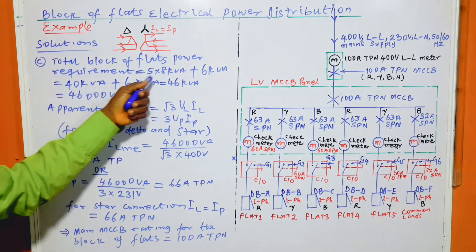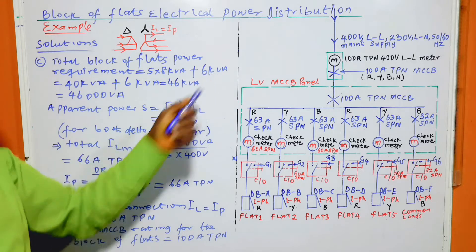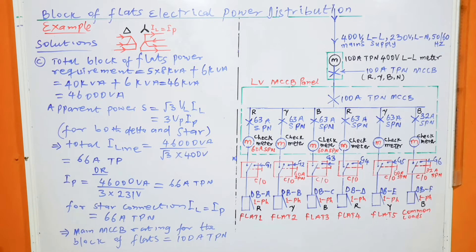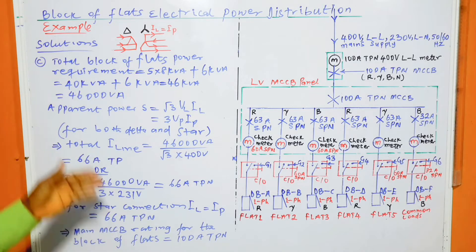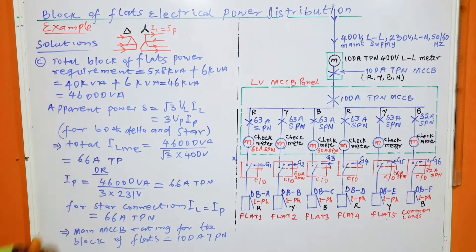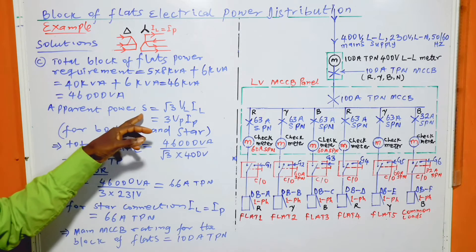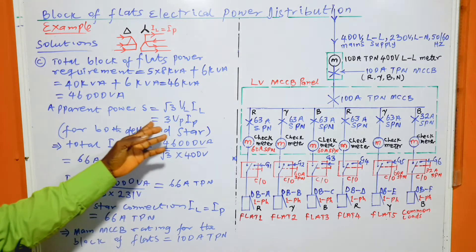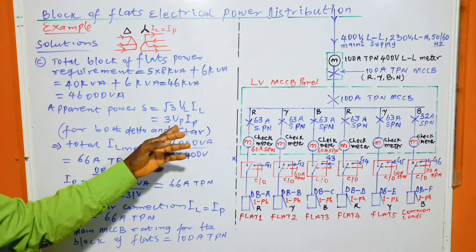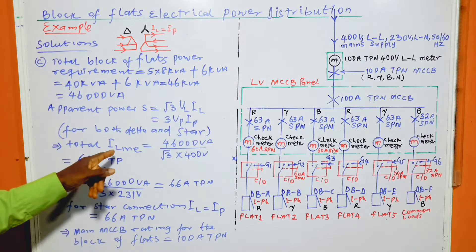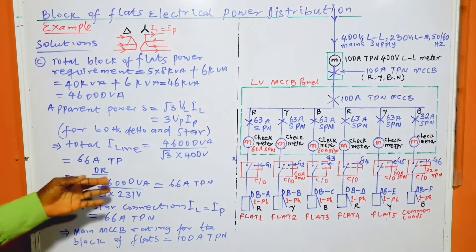Part C: total block of flats power requirement equals 5 times 8 kVA plus 6 kVA — five identical flats each requiring 8 kVA plus the 6 kVA common load — giving 46 kVA, which equals 46,000 VA. From apparent power S = √3 × V_line × I_line, which also equals 3 × V_phase × I_phase for both star and delta, we calculate the line current to be 66 amperes, three-phase.